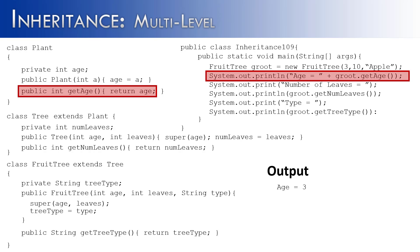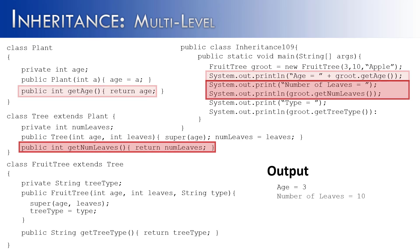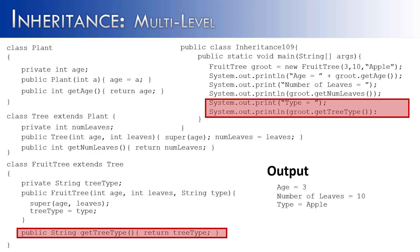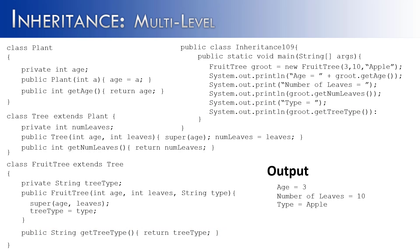Once everything is initialized, we can use things from all three classes. If we want the age, we say age equals Groot.getAge(), which returns 3. If we want the number of leaves, we say Groot.getNumberOfLeaves(), which returns 10. And for the subclass FruitTree, we say type equals Groot.getTreeType(), which returns apple. That's how you use code to implement multilevel inheritance.